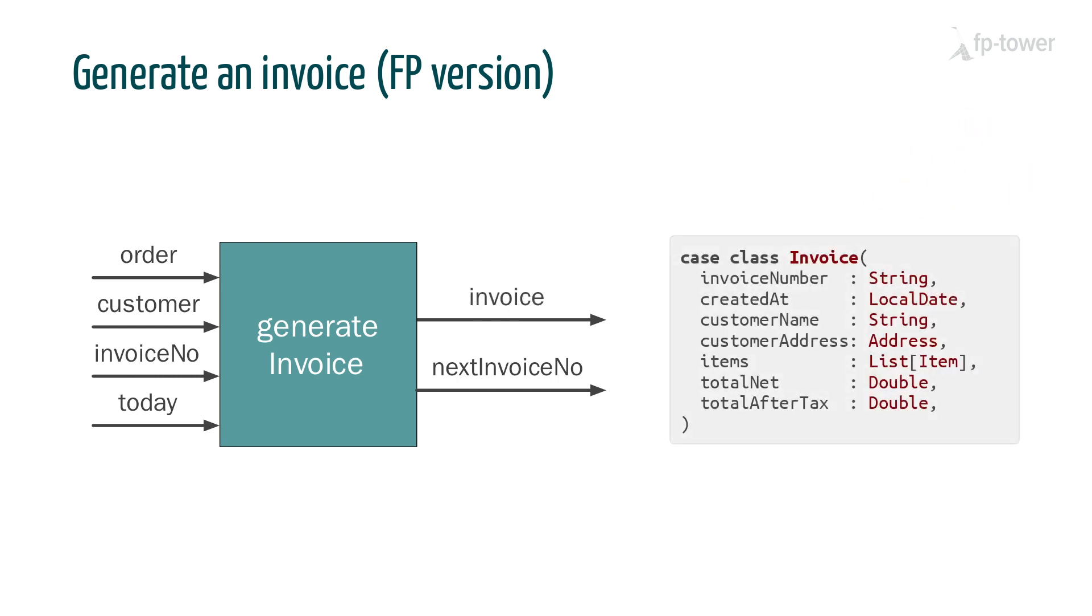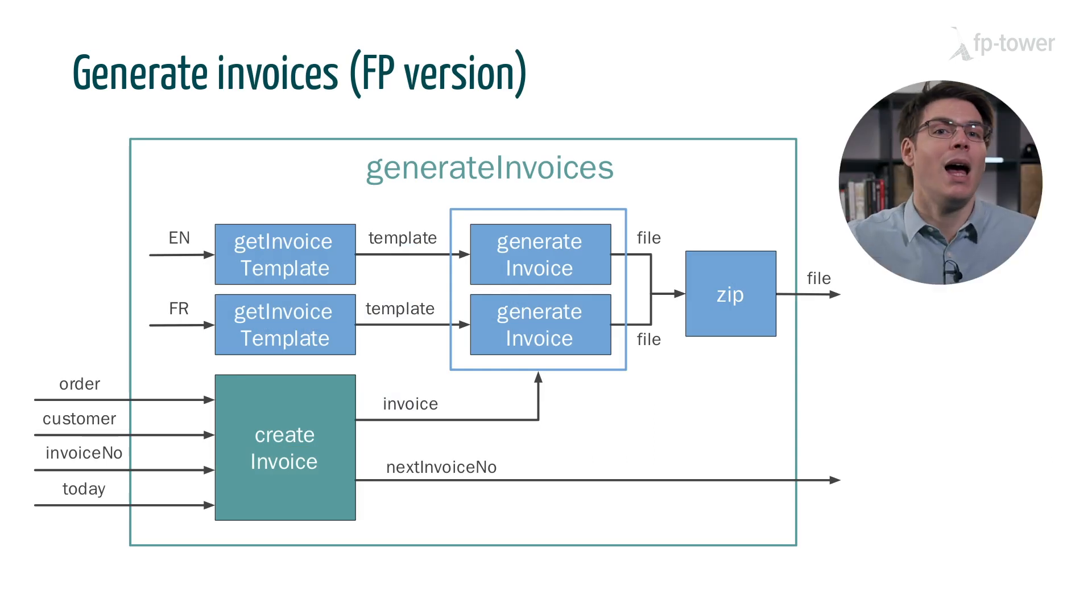I would also look to execute file generation as late as possible in the process. For example, the function could return a case class that describes all the data inside the invoice, including the customer's address and calculations such as the total before and after taxes. This will help tremendously in testing because it's much simpler to compare case classes than files. Additionally, we can reuse the invoice object to generate both the English and French document. For instance, we could have a function that looks up a template for a given language, in which case generate invoice would only be in charge of filling in placeholders using the invoice object. Finally, we can zip all the invoices files together and return the zip file along with the next invoice number.